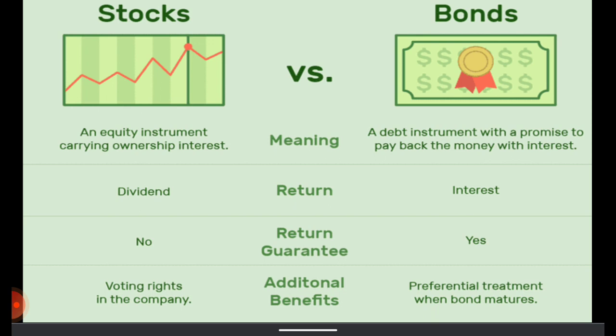The first difference is the meaning. Stocks are equity instruments carrying ownership interest. For example, if Mr. X owns 10 shares — stocks and shares are the same thing — 10 shares in a company, then he has ownership to the extent of 10 shares in that company. Whereas bonds are debt instruments with a promise to pay back the money with interest.